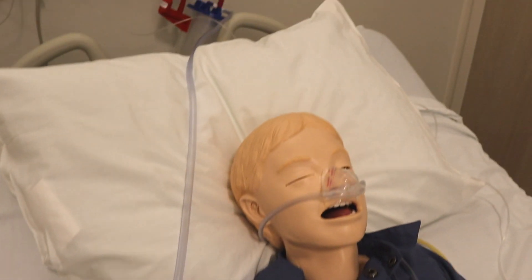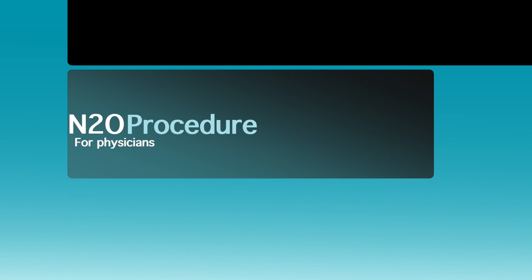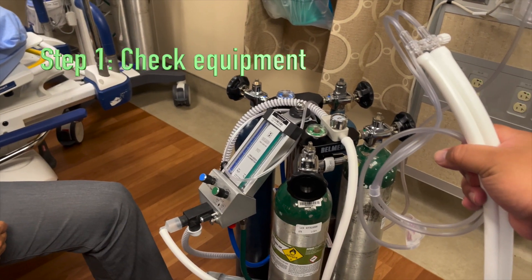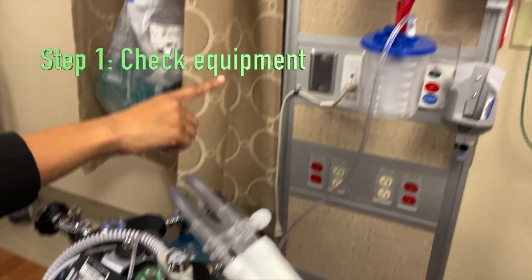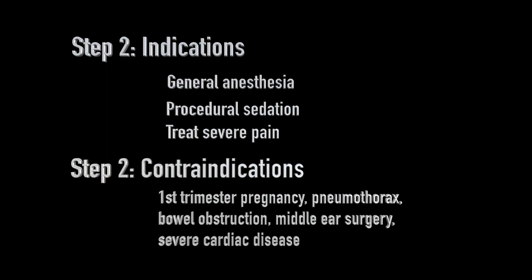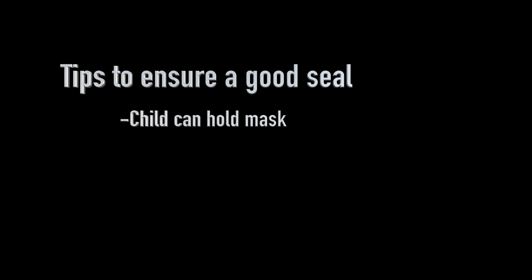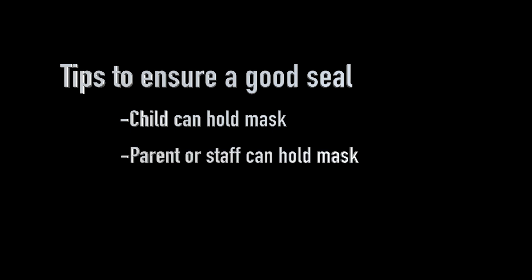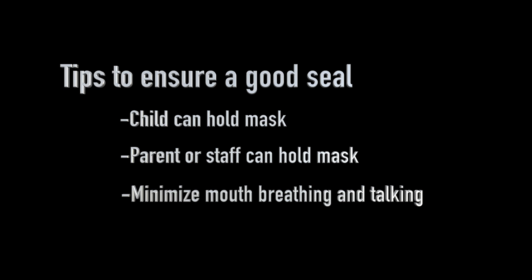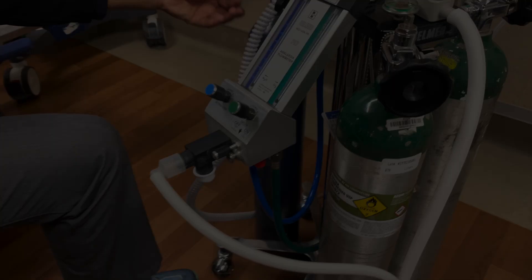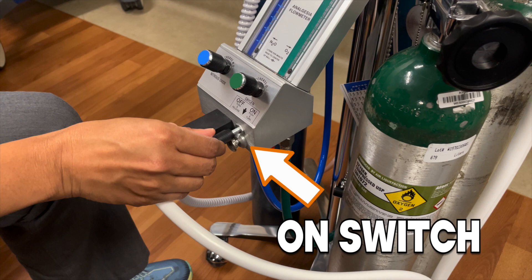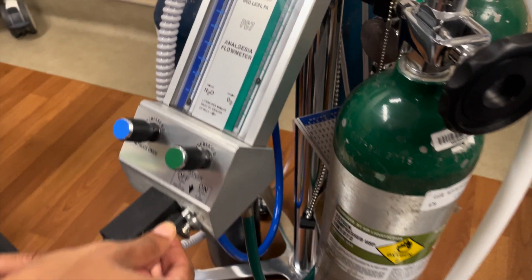We'll walk through the steps of the nitrous oxide sedation procedure for pediatric patients. As part of your pre-procedure checklist, have the RT check the equipment and scavenger, and review indications and contraindications. Perform a procedural timeout by confirming patient identification with two identifiers and confirming the procedure to be performed. A child can hold the mask if able; otherwise a parent or staff can hold it. Keep the patient talking and mouth breathing to a minimum to achieve sedation. Turn on the unit and allow the patient to breathe 100% oxygen for at least 30 seconds.